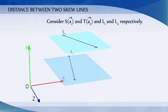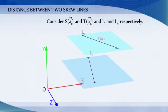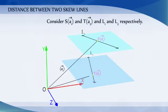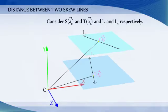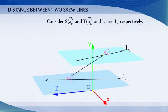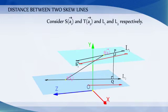Consider any point S on line L1 with position vector A1 and point T on line L2 with position vector A2. The magnitude of the shortest distance vector will be equal to the projection of ST along the direction of the line of shortest distance. If PQ is the shortest distance vector between L1 and L2, then it should be perpendicular to both B1 and B2.